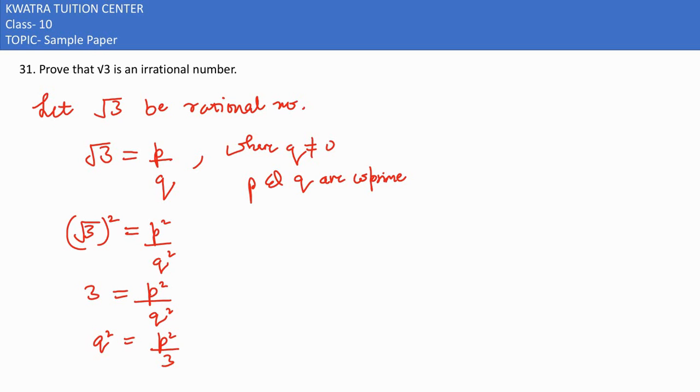Here we understand that P² is divisible by 3. P² is divisible by 3, and we can also say that P is also divisible by 3.